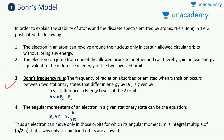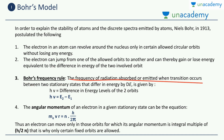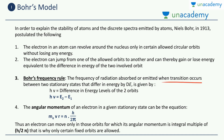The third postulate is known as the Bohr's frequency rule. The frequency of radiation absorbed or emitted during a transition — when the electron changes orbit number, say from n=1 to n=3 gaining energy, or from n=3 to n=1 losing energy — gives rise to either absorption or emission of radiation. The frequency of this radiation absorbed or emitted when a transition occurs between two stationary states differing in energy by ΔE is given by a specific equation.